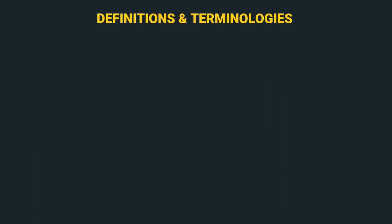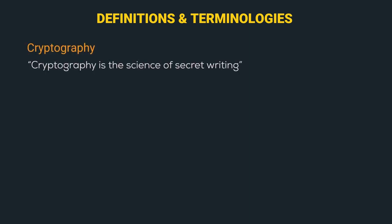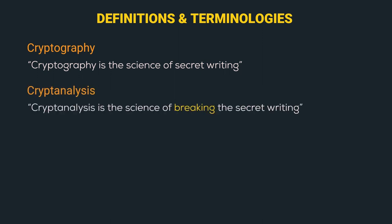Before diving into the topic, let's understand some definitions and terminologies. First is cryptography, which is the science of secret writing. The second is cryptanalysis — cryptanalysis is the science of breaking the secret writing. It is the study of breaking ciphers by finding loopholes or bugs in the encryption and decryption algorithms used in cryptography. So cryptanalysis is the complete opposite of cryptography.